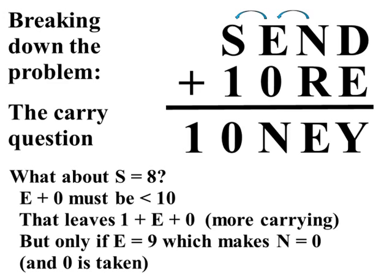Well, if E was 9, 1 plus 9 plus 0 would be 10. That would make N 0, and 0 is taken. So, that leaves us with S equals 9.